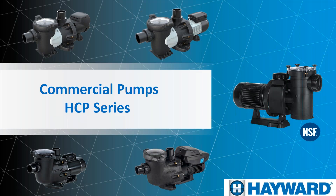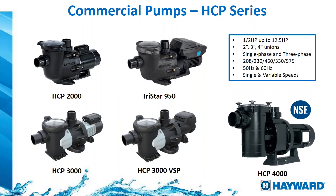Let's talk about commercial pumps — this is going to be the HCP series. We have several models: the HCP-2000, the TriStar 950, the HCP-3000 also in variable speed, and the biggest one is the HCP-4000, which goes up to 12.5 horsepower. Connections on these models vary from 2-inch or 2.5-inch up to 4-inch. Depending on the model and size of the pump, connections can be 208 or 230 volts, up to 460, 330, or 575 volts.